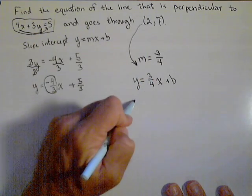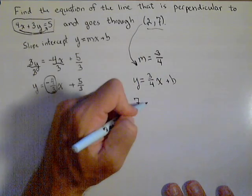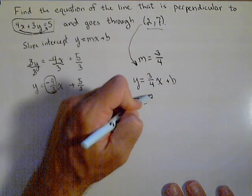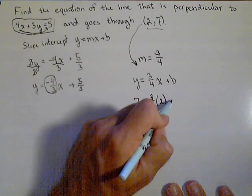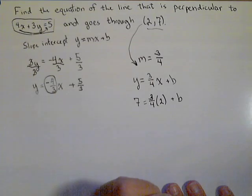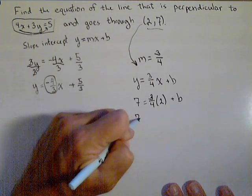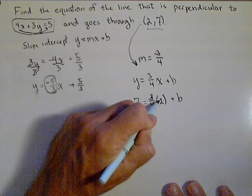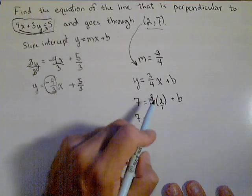Because we know that when y is 7, from this point, x has to be 2. So 3 fourths times 2 plus b is enough information to solve for b. So we have 7 equals, we can think of this as 2 over 1 for multiplying fractions. So we have 3 times 2, which is 6.